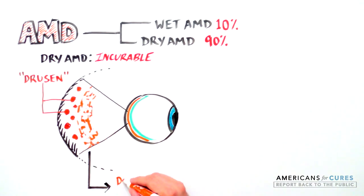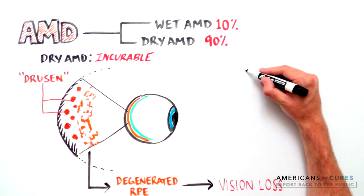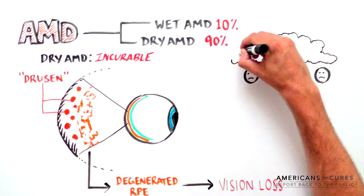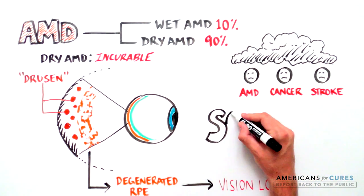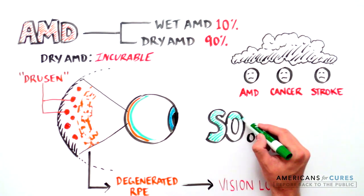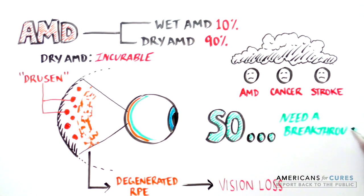Dry AMD is currently incurable, and visual impairment and blindness can have a disproportionate impact on people's perception of their quality of life, often compared to that of patients with advanced cancer, intractable pain, or stroke patients. These patients have endured a traumatic experience and need a breakthrough therapy to restore their quality of life. Stem cells may offer an answer.